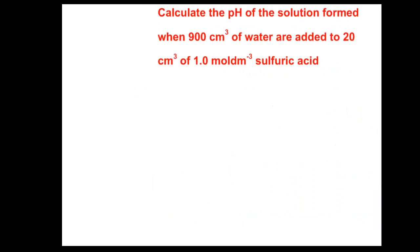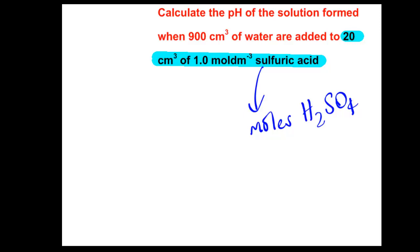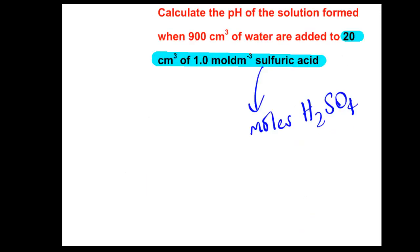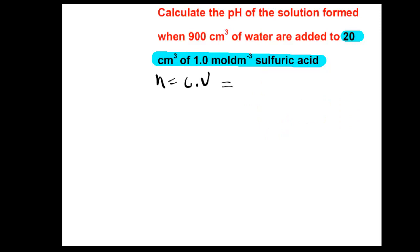Here's another question. Take 20 cubic centimetres of sulfuric acid of concentration 1 mole per cubic decimetre and convert to moles. Using n equals cv, convert 20 cubic centimetres to 0.02 dm³. So n = 1 × 0.02 = 0.02 moles of sulfuric acid. Next, take account of the fact that water has been added to dilute the sulfuric acid.